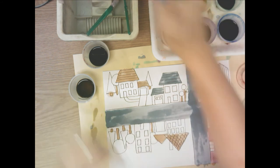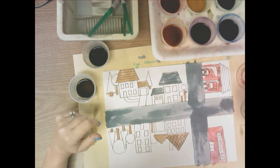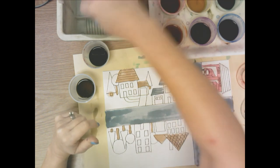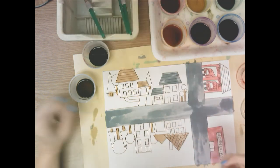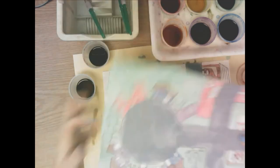And then after you get everything painted, this white space, that's going to be painted green for grass until your paper looks like this.